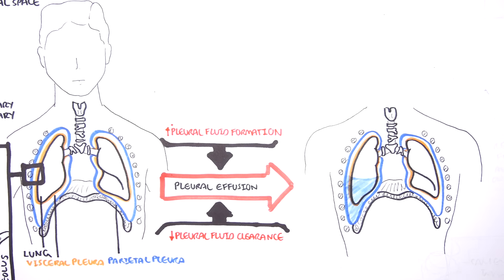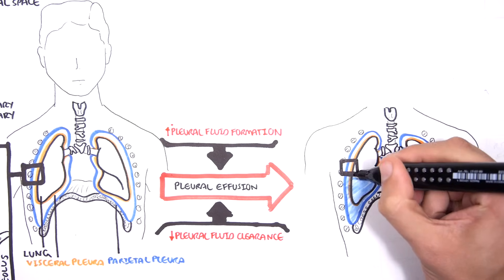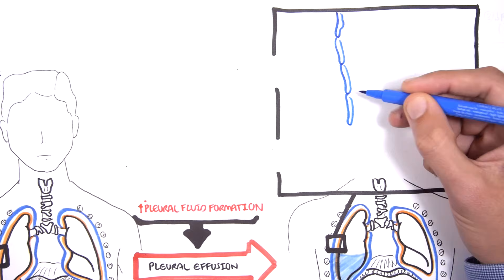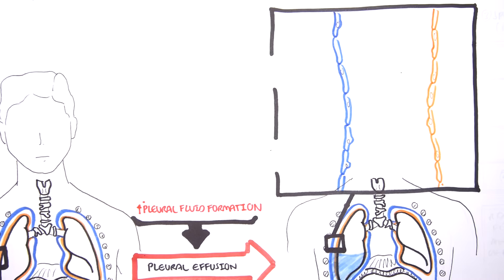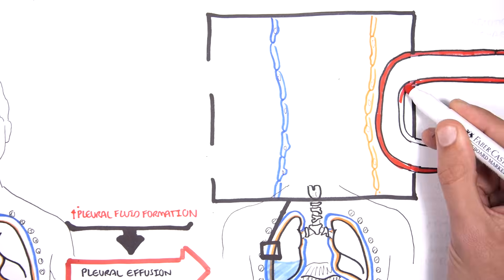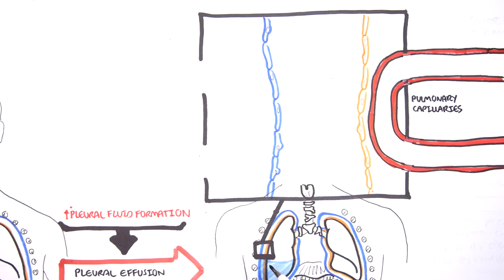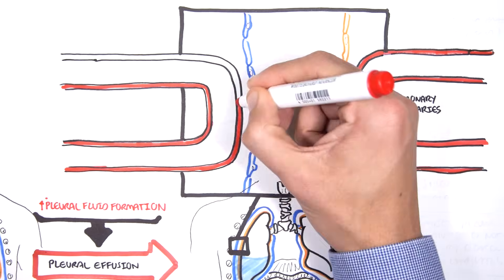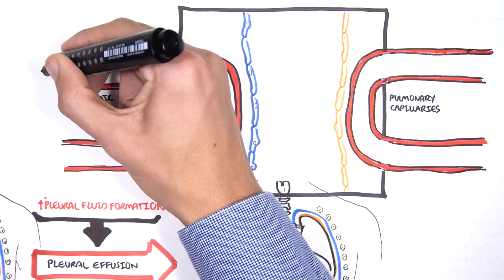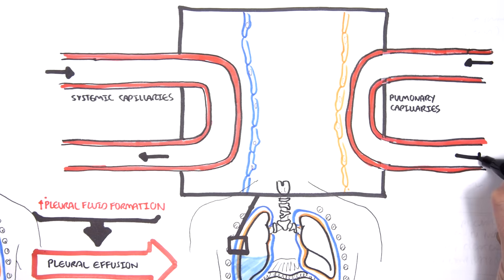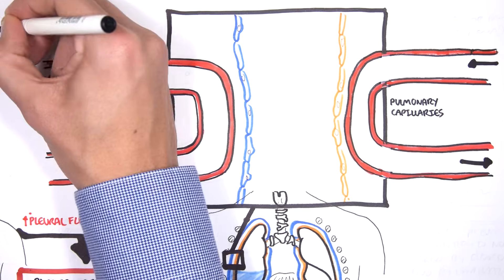Let's take a look at some examples of the first mechanism, where you have an increase in pleural fluid formation. Let's zoom into the right lung here, where we find the pleural effusion. Here you can have your pulmonary capillaries, part of your visceral space, and here are your systemic capillaries, which are part of your parietal space. Imagine in either the pulmonary or systemic capillaries, you have inflammation.